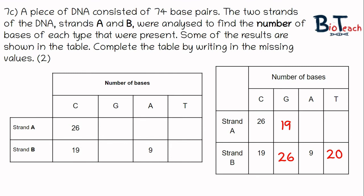Now if T on strand B is 20, then that means strand A must have the same number of A as they're complementary to each other, so strand A has 20 adenine bases. Finally, if we have nine adenines on strand B, then there must be nine of thymine on strand A as they're complementary.